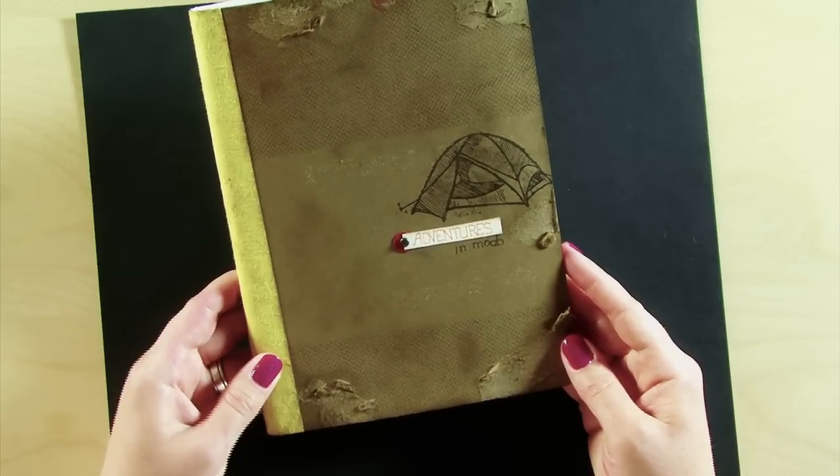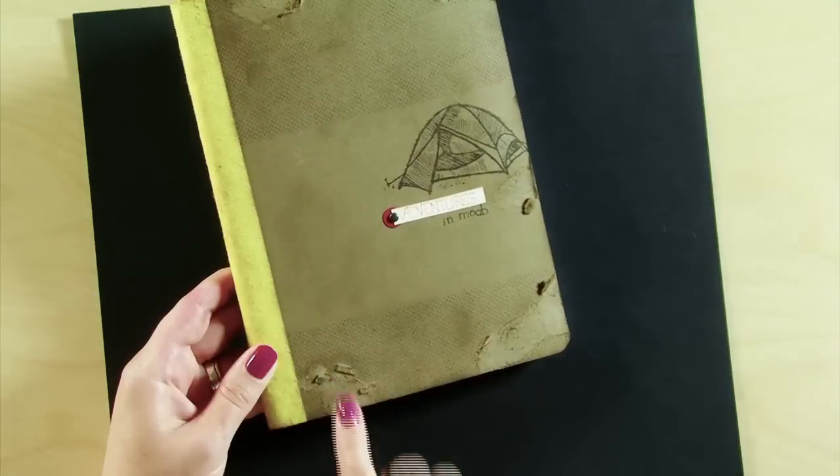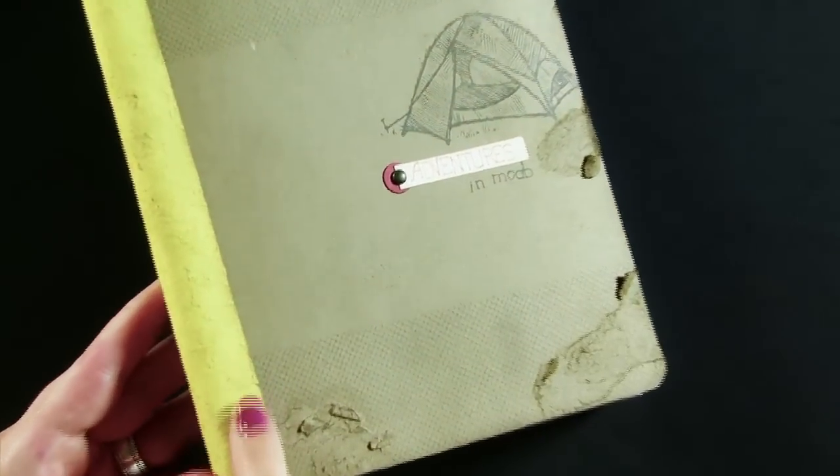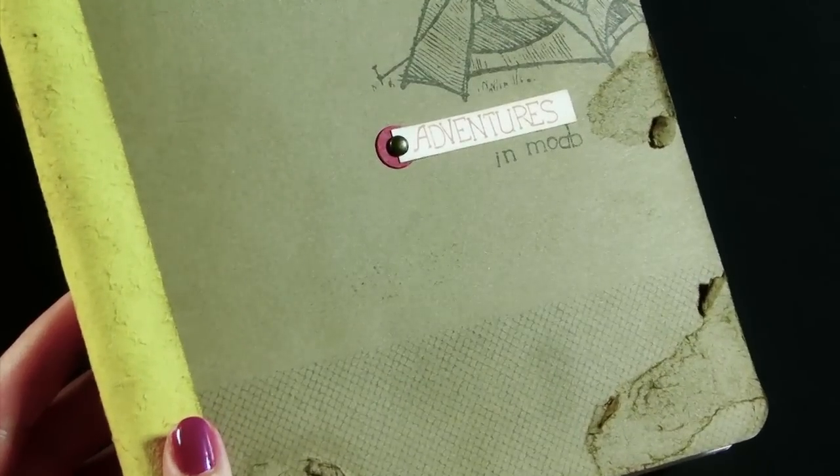What I really wanted to show off to you is the way that we've distressed the paper. It's really fun and it's really easy. You can see that the spine actually looks like leather and I want to show you how to do that.